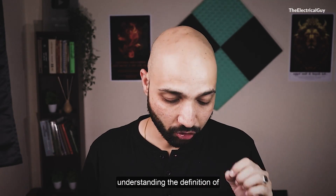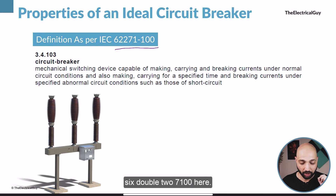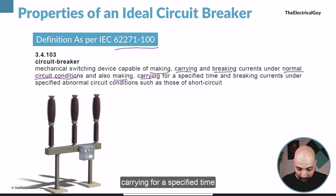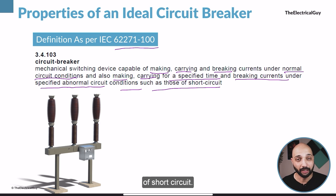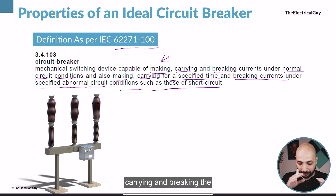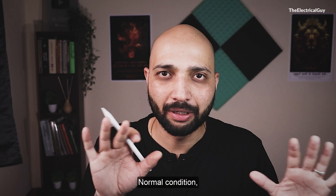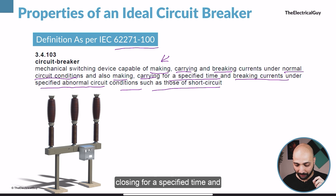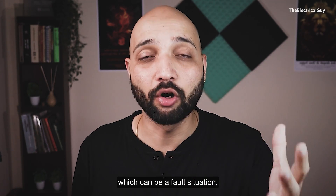Let us first start by understanding the definition of a circuit breaker given by IEC 62271-100. It states: a circuit breaker is a mechanical device capable of making, carrying, and breaking current under normal conditions, and also making and carrying for a specified time and breaking currents under abnormal conditions. So there are two parts: normal circuit conditions, and fault or abnormal conditions.